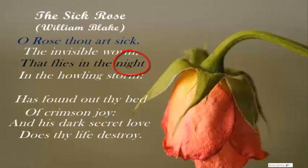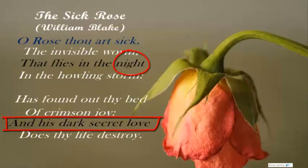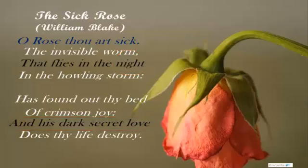The worm's evil nature is proven by the expression that it flies in the night. At night most living beings prefer to rest and sleep; however, the darkness of night also excites and agitates certain creatures, especially dark and evil forces. The poet uses night to describe the surreptitious, vicious, and evil nature of the worm. This intent is further defined by the expression that it carries 'dark secret love.'